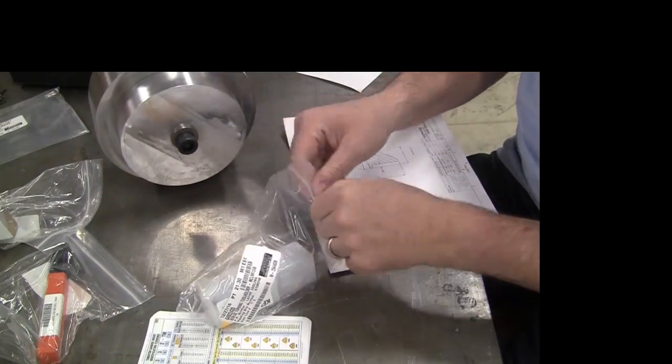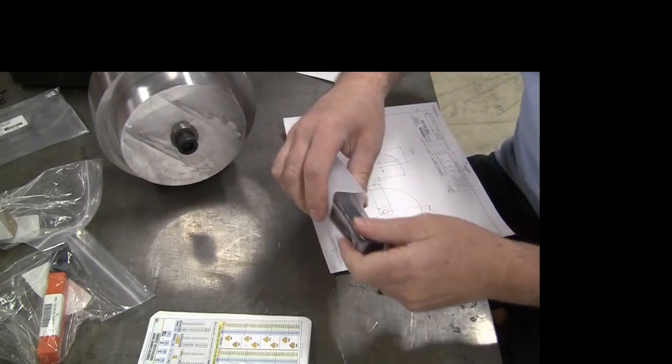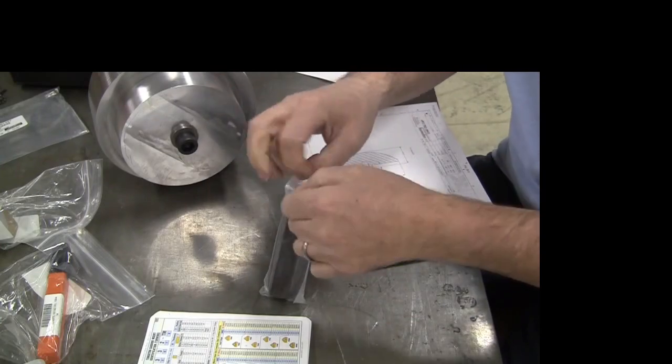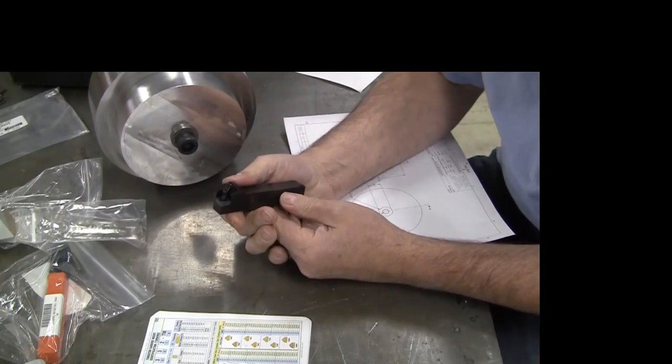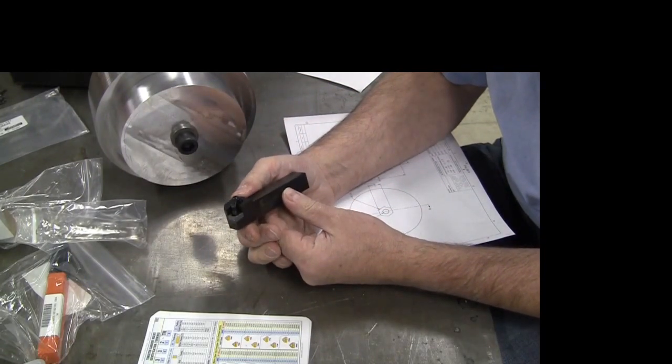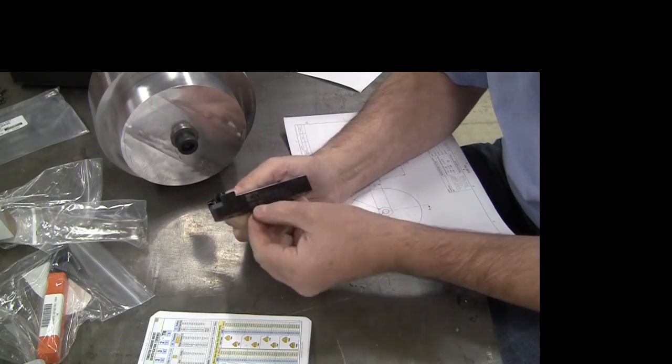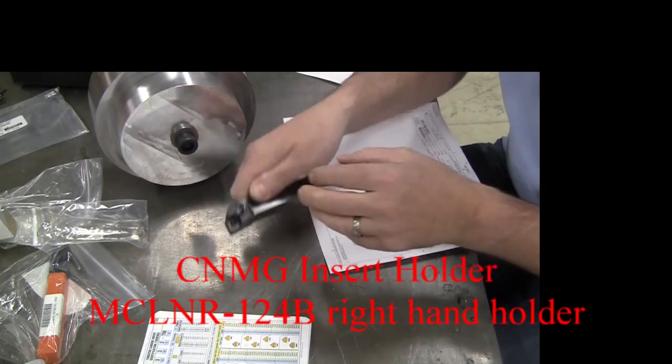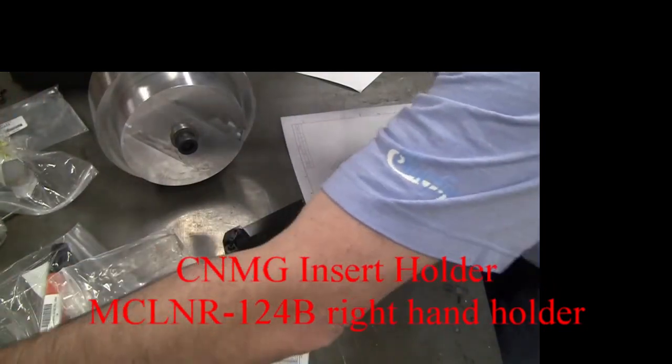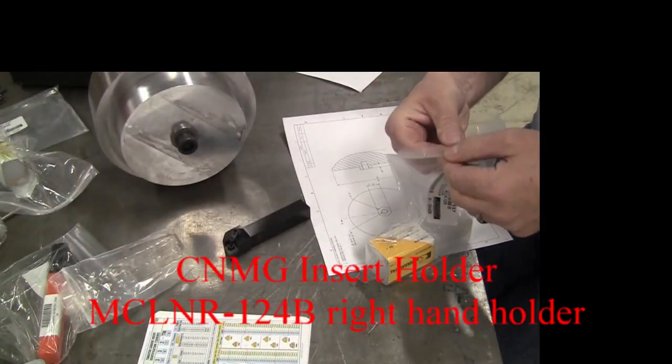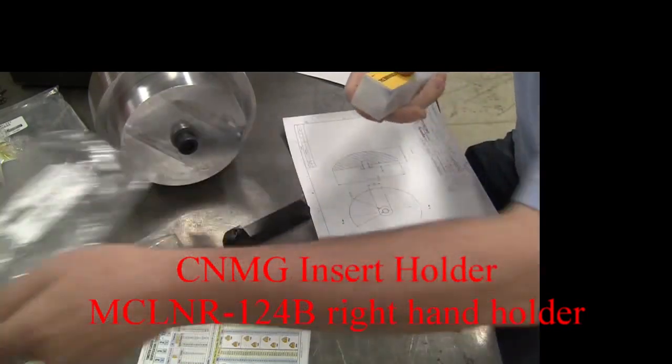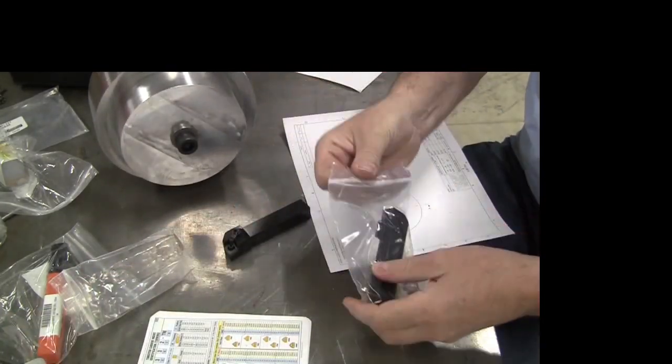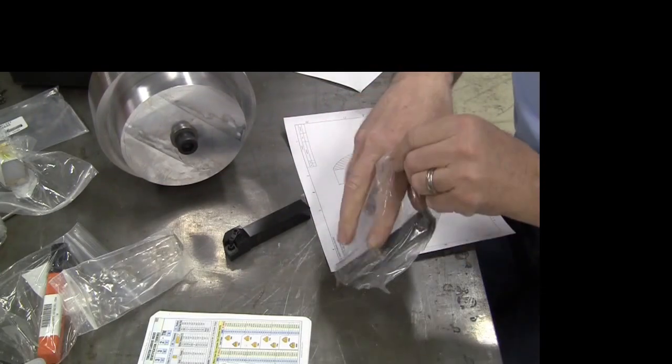I ordered some new holders and these are them, from Kenna metal. These are the CNMG holders. I wanted a holder that had negative rake and something that was also clamping with a screw and a clamp as well, just for rigidity. There's the new holder right there. This is a right-handed holder, MCLNR 124B is the part number. Then the inserts I bought—I bought a left and a right so I can use one setup for facing.